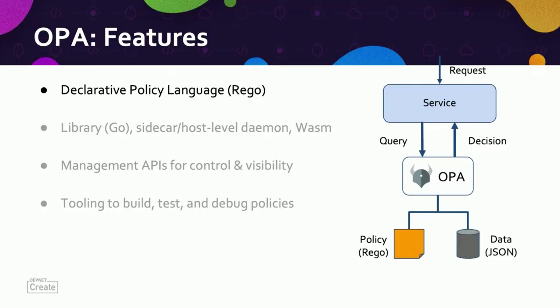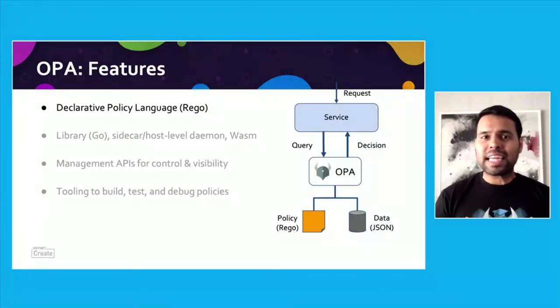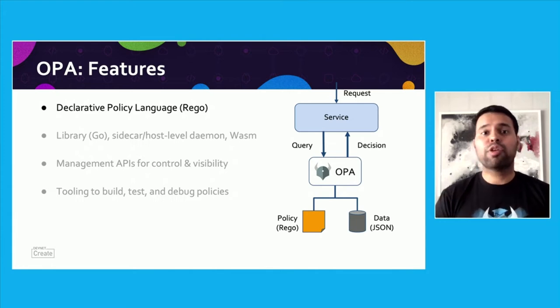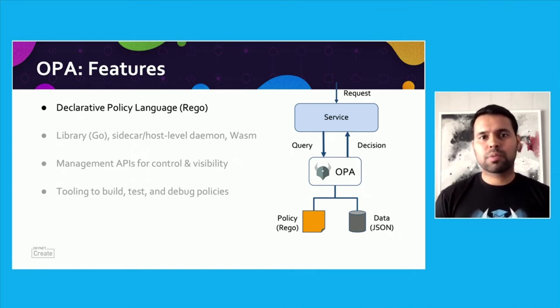At the core of OPA is a high-level declarative language called REGO. With REGO, you can write policies which are more than just allow or deny — true or false, yes or no. Your policies can be strings, sets, objects, basically a collection of values. So it's very expressive in terms of the policy decisions you can author. For example, OPA can help you answer the question 'Is Bob allowed to access a particular field?' and also 'Which fields can Bob access?' — making it very flexible and powerful.